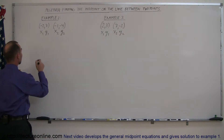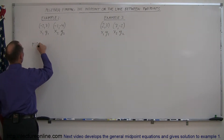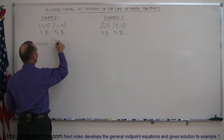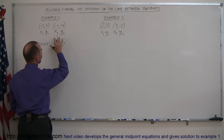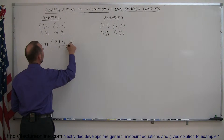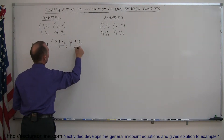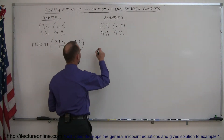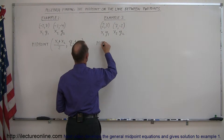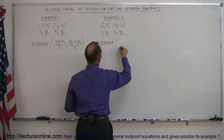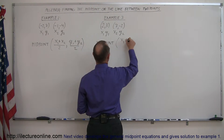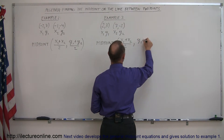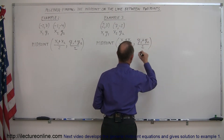Then write down the equation, or the formula, for how to find the midpoint. The midpoint can be defined as the x and y coordinates found by adding x1 and x2 — the x coordinates of the two points — together and dividing by 2, and adding the two y coordinates of the two points together and dividing by 2. That's how you find the midpoint between any two points on the xy plane.